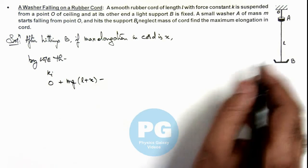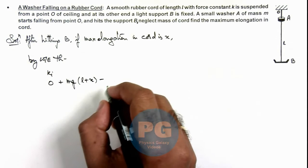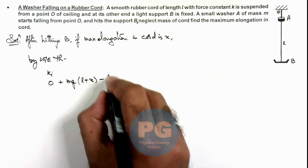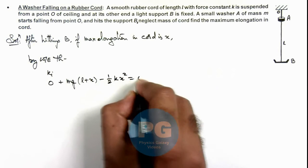Minus the energy absorbed by the cord in its elasticity, we can write as (1/2)kx², that is equal to zero.